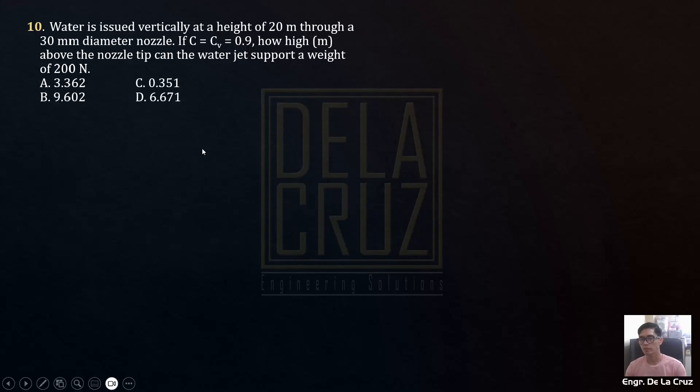Alright, so let's have number 10. Water is issued vertically at a height of 20 meters through a 30 mm diameter nozzle. If C and CV are equal, and that's 0.9, coefficient of discharge and coefficient of velocity, how high in meters above the nozzle tip can the water jet support a weight of 200 newtons?